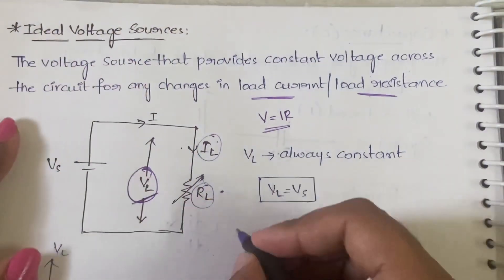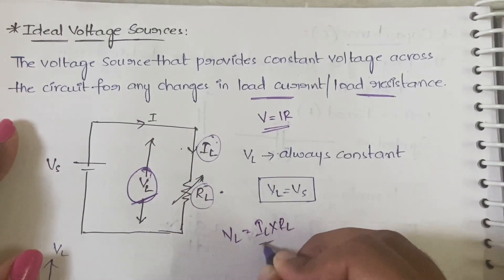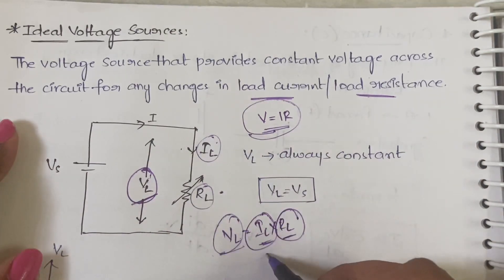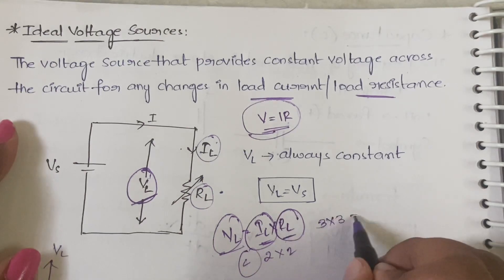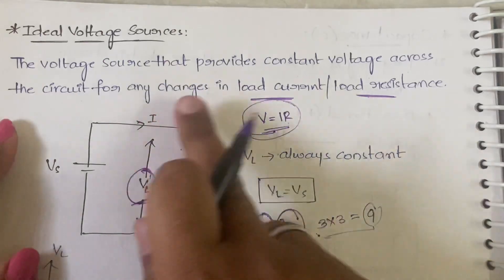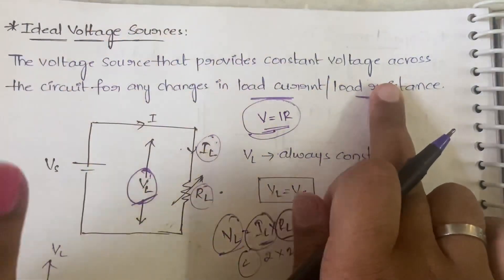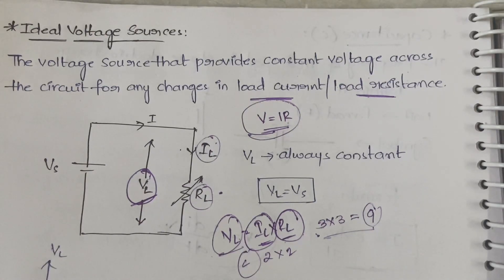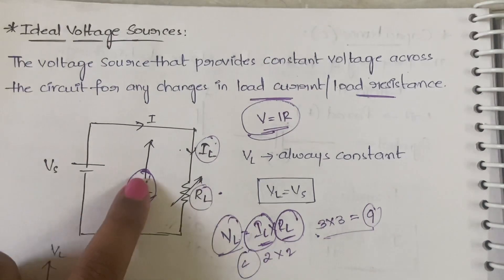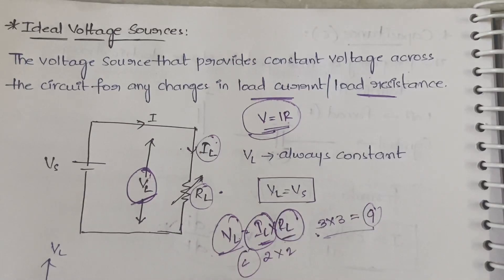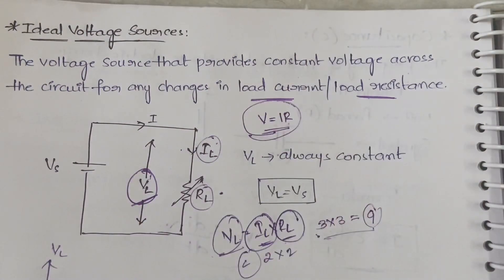Since VL = IL × RL, if IL and RL are changed according to Ohm's law, VL should also change — for example, if I = 2 and R = 2, V = 4; if I = 3 and R = 3, V = 9. But in an ideal voltage source, even though you make changes to load current or load resistance, VL remains constant and is always equal to the source voltage Vs. So VL = Vs.